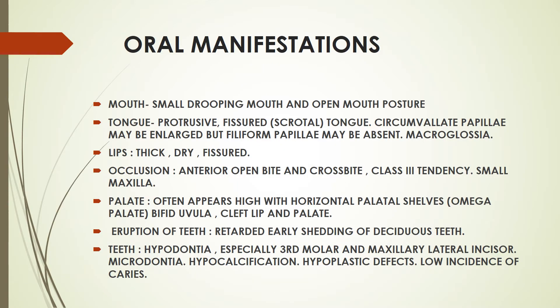The oral manifestations of Down syndrome: The mouth is small with a drooping appearance and usually there is open mouth posture. The tongue is protrusive and fissured; the circumvallate papillae are usually enlarged, the filiform papillae are absent, and the tongue size is large - that is macroglossia. The lips are thick, dry, and fissured. Regarding occlusion, the most commonly seen malocclusion is Class 3, and there is anterior open bite and crossbite; the size of the maxilla is small.